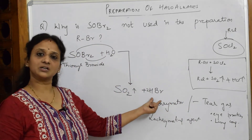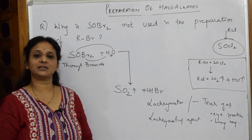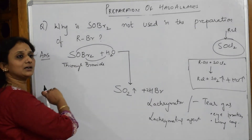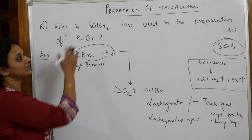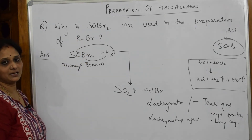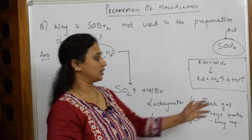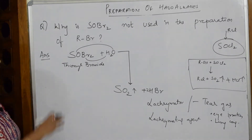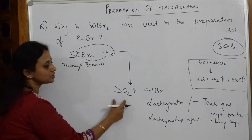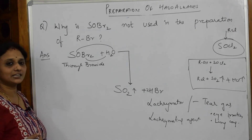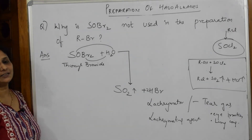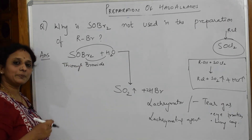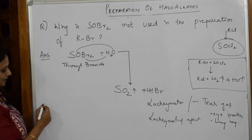So this HBr released acts as a lacrimating agent and causes irritation to the eyes. That is the reason SOBr2 is not preferred or used to prepare RBr. The safest and most economical method remains using thionyl chloride for preparation of RCl. SOBr2 is not used because of the formation of a lacrimating agent and an effluent that cannot be used.